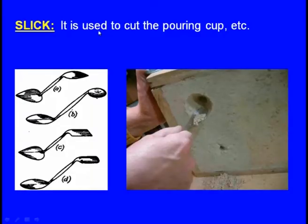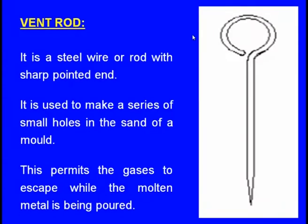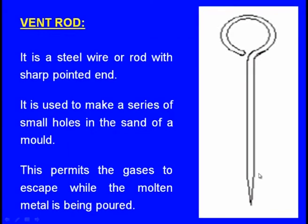Next, slick: it is used to cut the pouring cup — the wide opening at the top of the cope box. Next, wind rod: it is a steel wire or rod with a sharp pointed end, used to make a series of small holes in the sand of a mould. These vent holes permit gases to escape while molten metal is poured into the cavity.